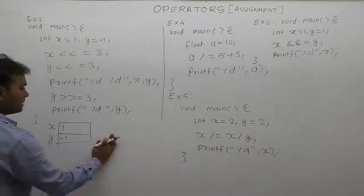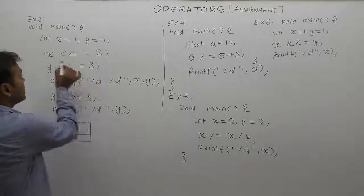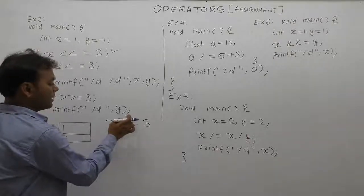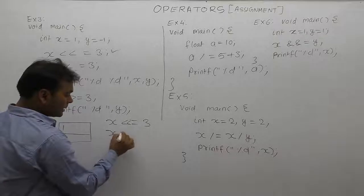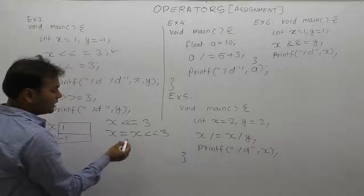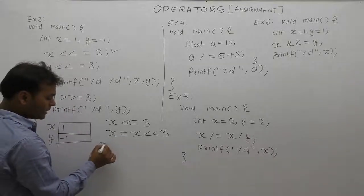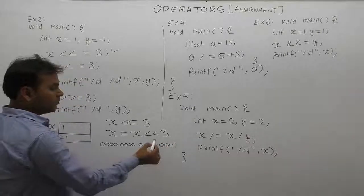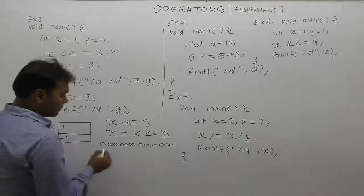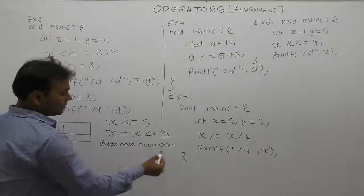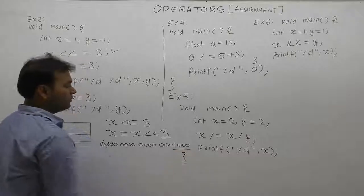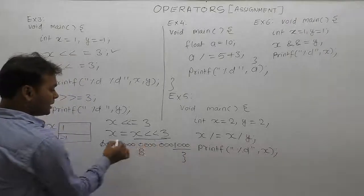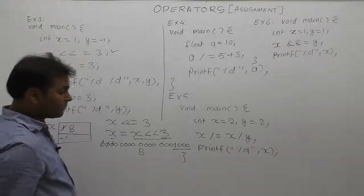The first operation is x left-shift equals 3, which is equivalent to x equals x left-shift by 3. The existing value of x is 1. In 16-bit binary representation, x is 0000...0001. After left shift, three bits are removed from the left side and three zero bits are inserted on the right. The result is 8, and this is now assigned back to x.